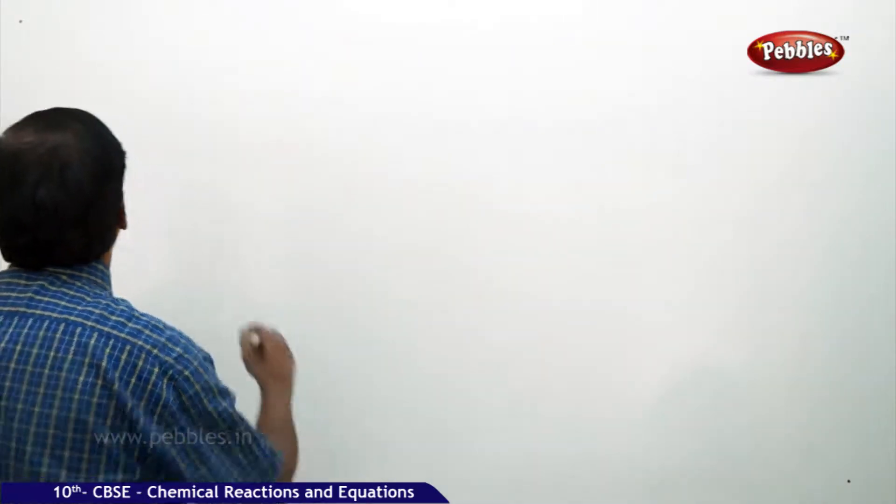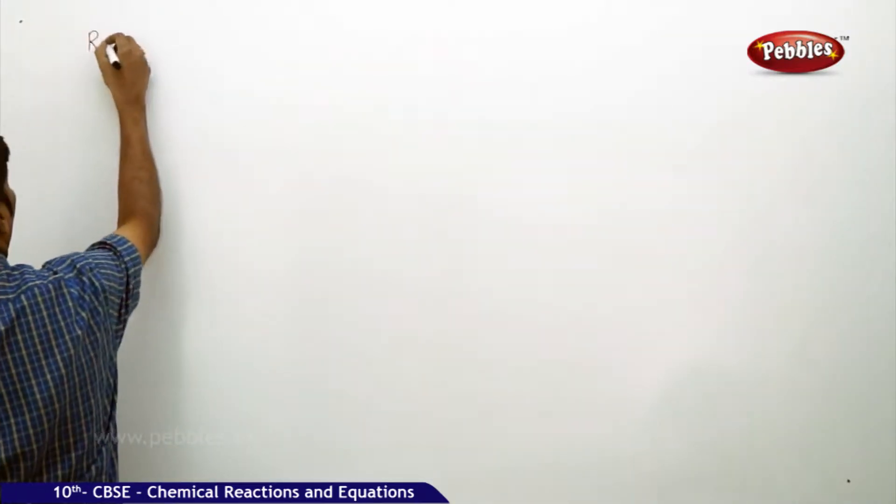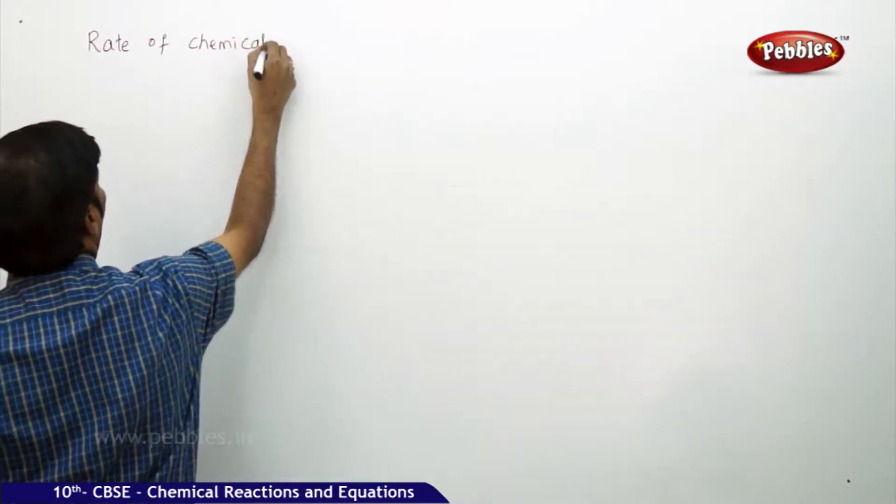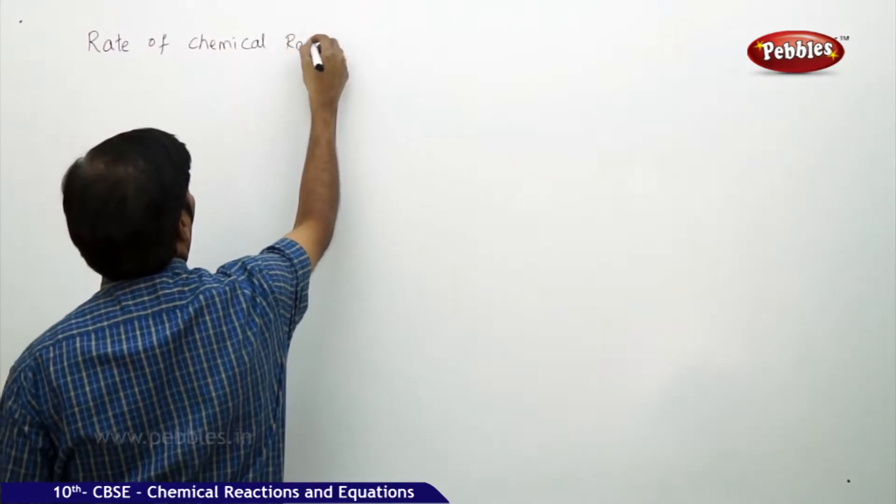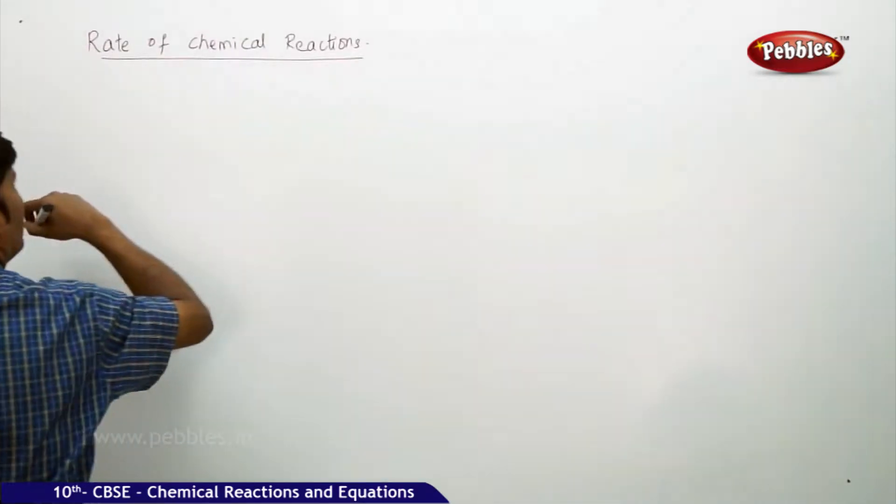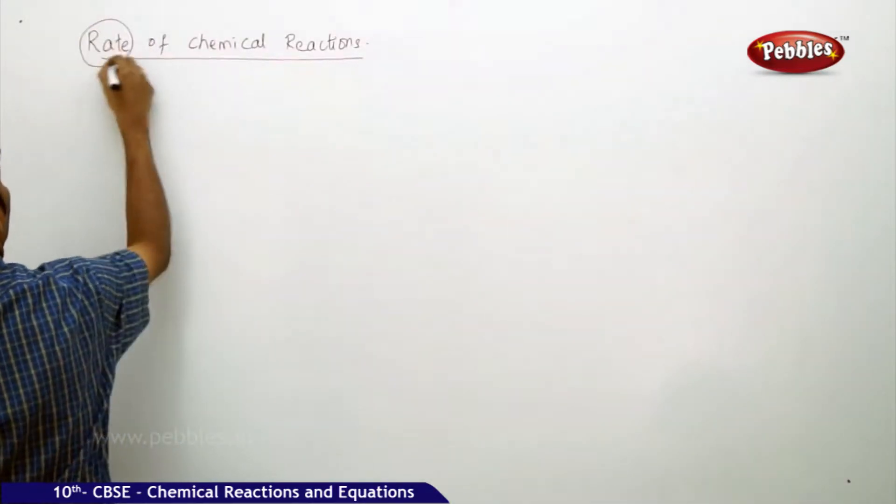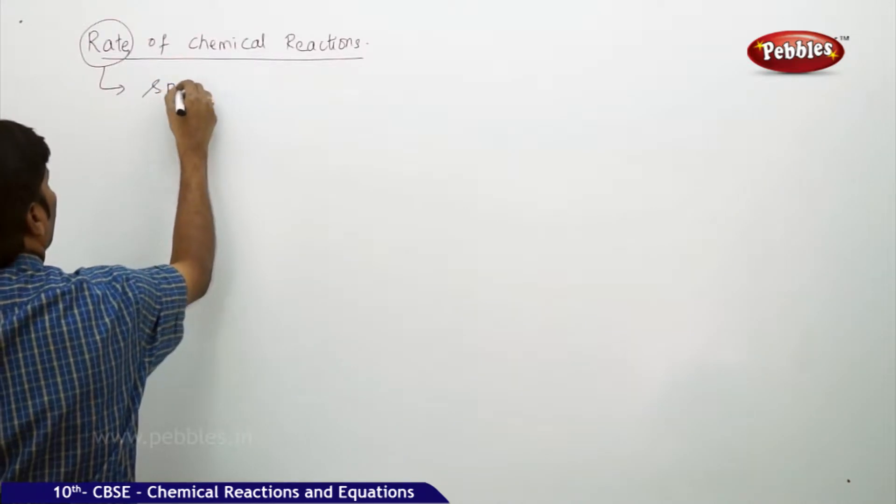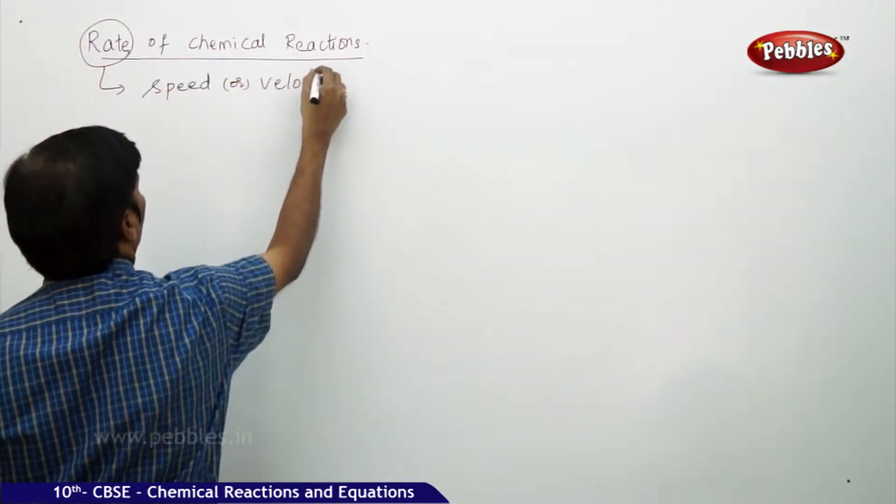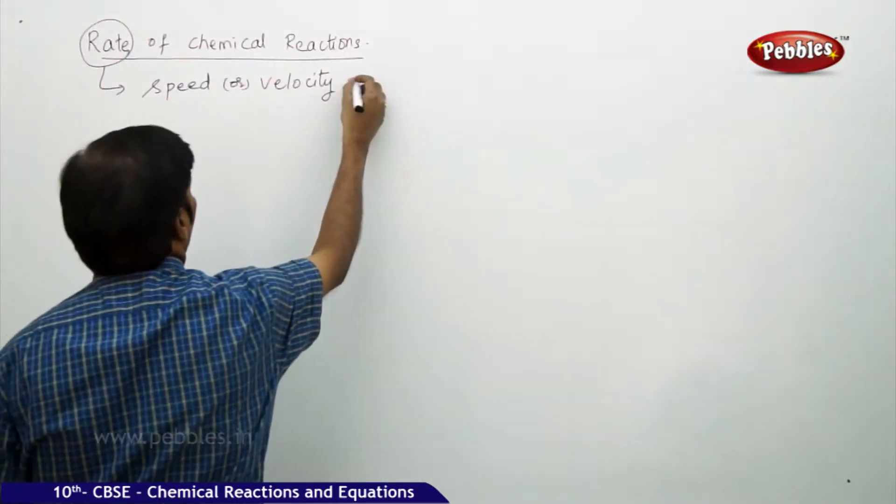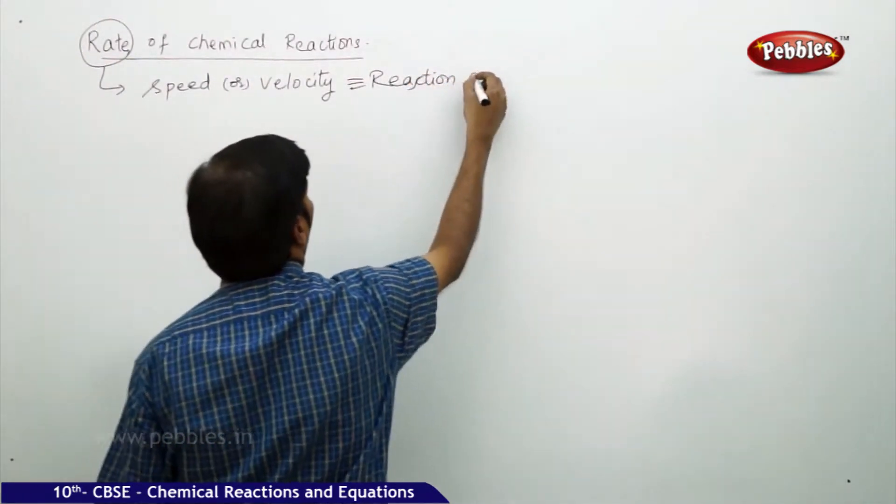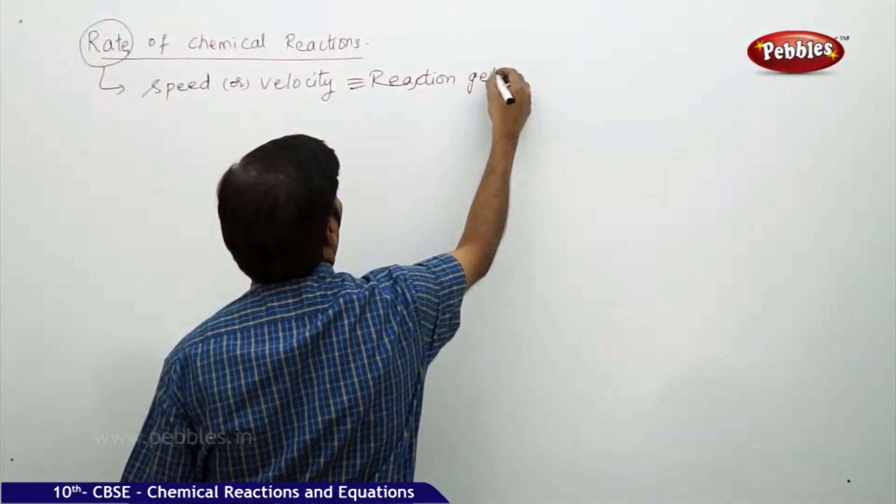The next part of the discussion is rate of chemical reactions. The word rate here means the speed or velocity with which the reaction gets completed.